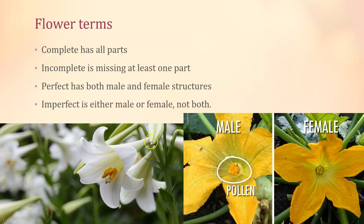Perfect and imperfect is just about whether the flower has both male and female parts. Perfect means it has both — a lot of plants are technically hermaphrodites. This lily, even though it's incomplete because it lacks sepals, is perfect because it has both stamens and a carpel.